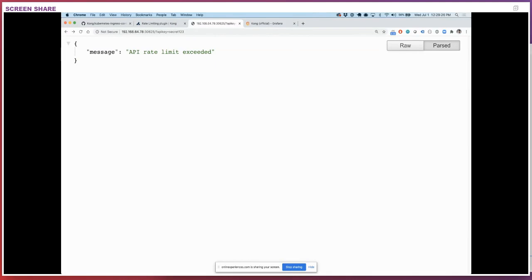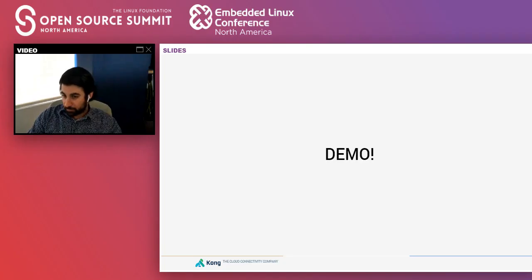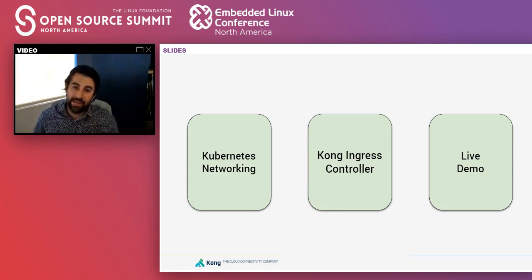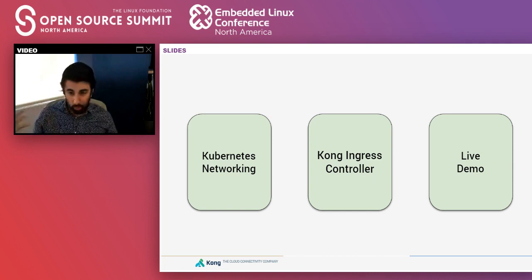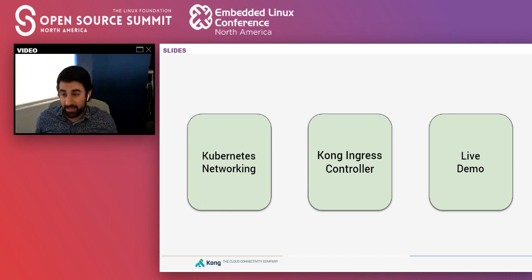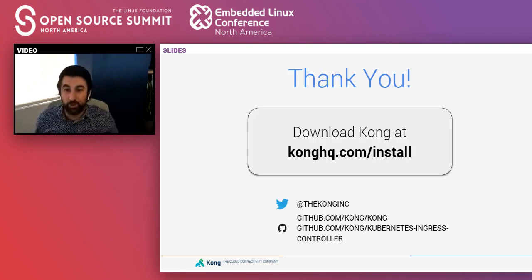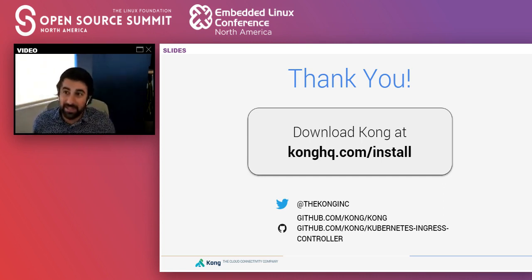Today we have looked at different ways to expose our services in Kubernetes: node port, load balancer, ingress. We focused on the Kong Ingress Controller. We've seen a live demo that allows us to secure, protect, rate limit, and observe all the traffic going through the ingress. We also went on a discussion about service mesh. You can download Kong at konghq.com/install. I'll be connected for the next five minutes in case you have additional questions.